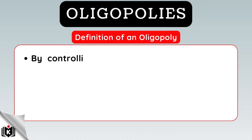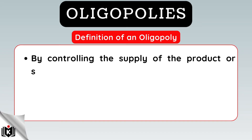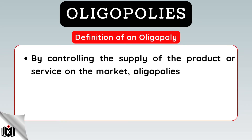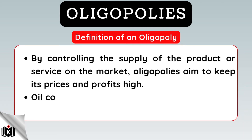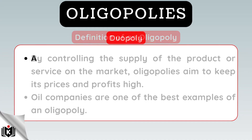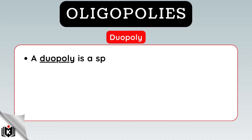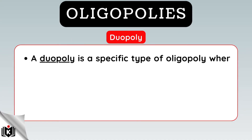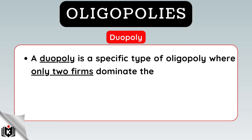By controlling the supply of the product or service on the market, oligopolies aim to keep its prices and profits high. Oil companies are one of the best examples of an oligopoly. A duopoly is a specific type of oligopoly where only two firms dominate the entire market.